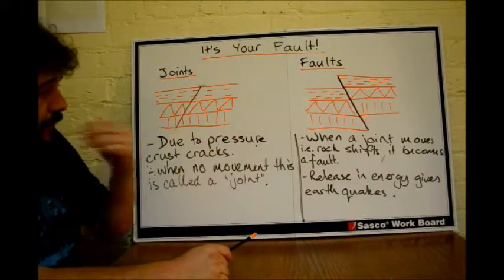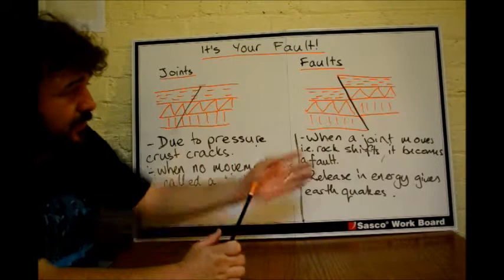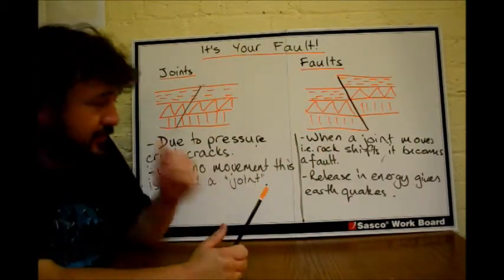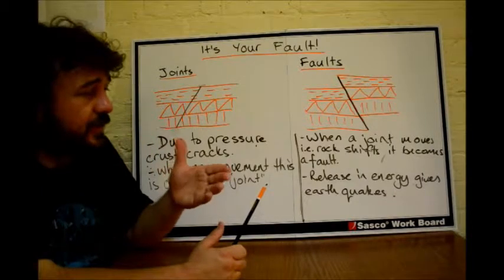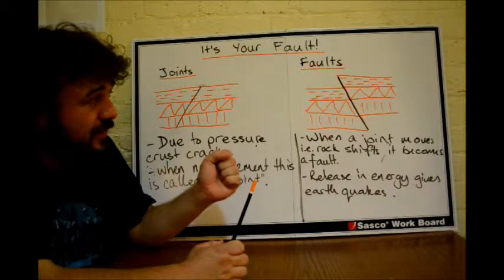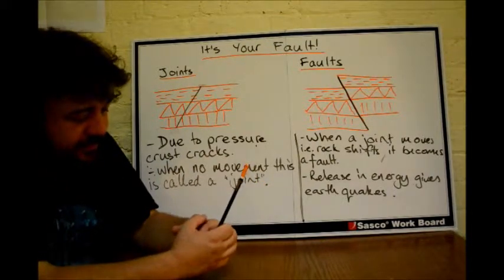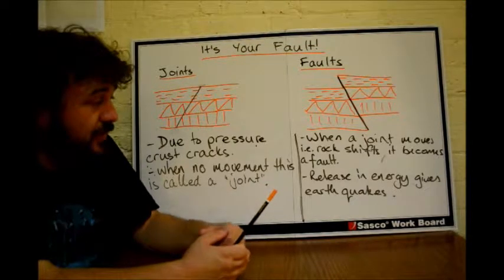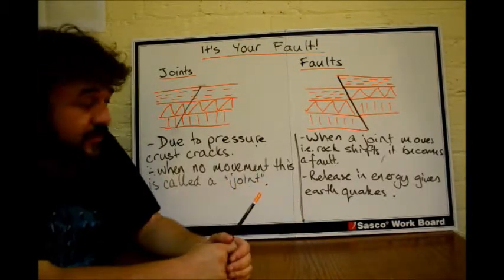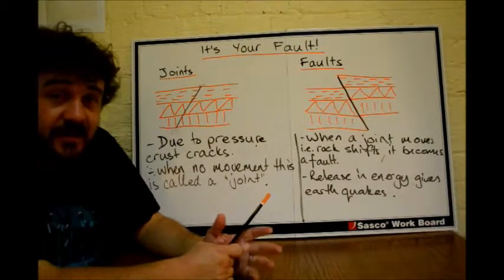Now, when it starts to move and you have this sort of slippage, the rock shifts, that's a fault. So a fault is a crack in the rock where it's moved around, it's not stayed in one place. This, because it sticks together so well and then it violently moves, the releasing energy there is what gives us earthquakes. That's where that comes from. And we'll talk about a tsunami in particular in a minute.